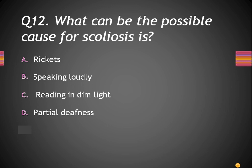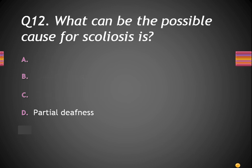Next question: What can be the possible cause for scoliosis? Option A, rickets; B, speaking loudly; C, reading in dim light; and D, partial deafness. The correct answer is option D, partial deafness. When there is partial deafness, the person tries to bend his body to the side to listen to others, and that can become a habit, leading to scoliosis.